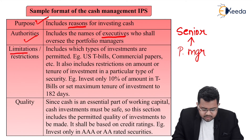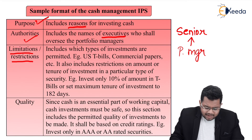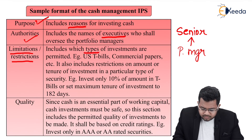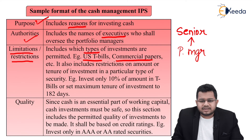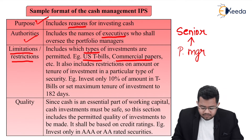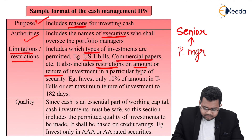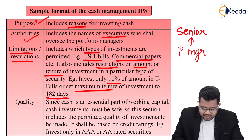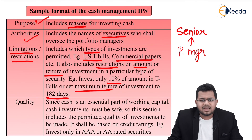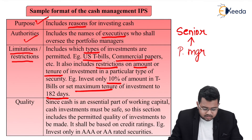Next, limitations or restrictions, which is very important. It will include which types of investments are permitted — for example, US T-bills, commercial papers, etc. We studied ten types of short-term investments; it can be one of those. It also includes restrictions on amount or tenure of the investment in a particular type of security — for example, invest only 10% of amount in T-bills, or set a maximum tenure to 182 days. Every such restriction or limitation has to be noted down here.